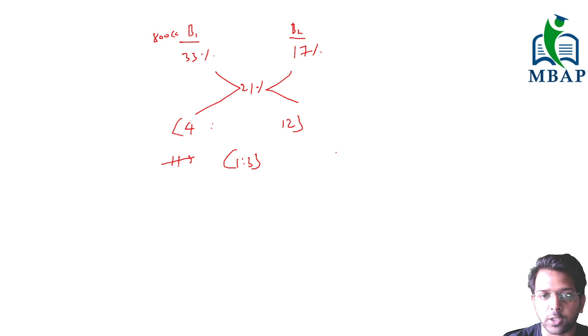For this new mixture of 800 cc, 1 part would be 200 cc to come from bottle 1. And 3 parts will come from bottle 2, which accounts for 600 cc.